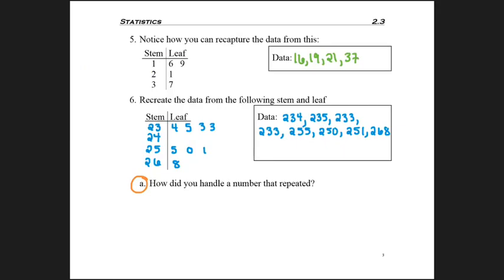The question kind of came up: how did you handle the number that repeated, that 3? Well, hopefully you included it in the data, right? What happens is if somebody was asked to take this table on the right and recreate it, they would have chopped the first 233 and then they would have chopped the second 233.